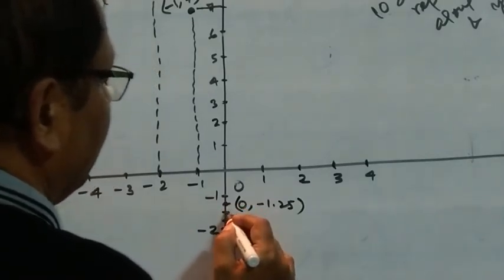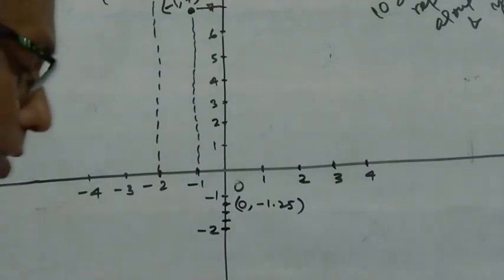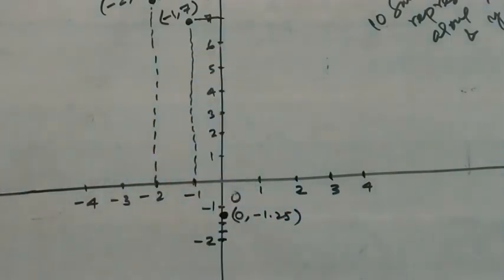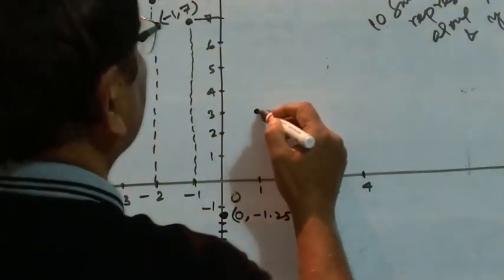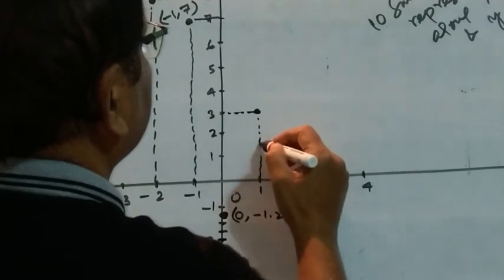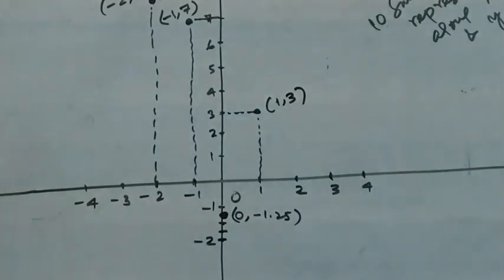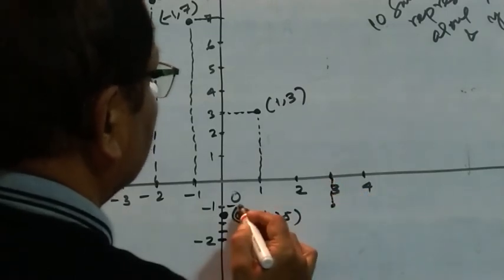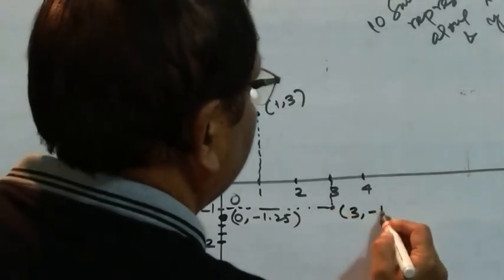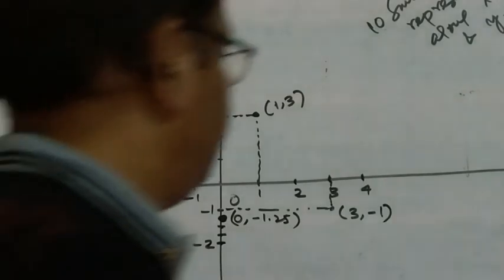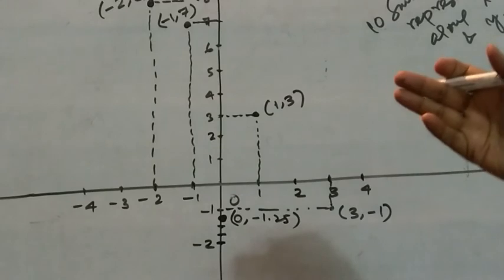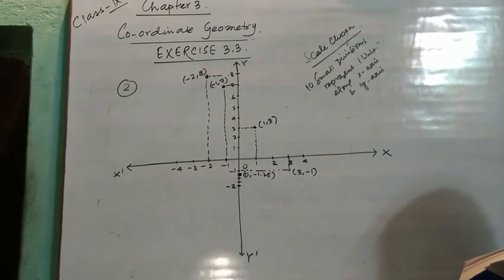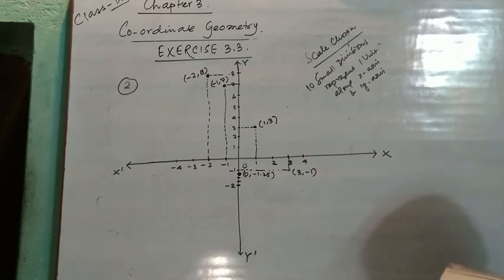The point (1, 3) lies in the first quadrant — X is 1 and Y is 3. The last point is (3, minus 1), which lies in the fourth quadrant — X is positive 3 and Y is negative 1, giving the coordinate (3, minus 1). In this way, we can plot all the points given in the table on the coordinate plane, choosing suitable units of distance on the axes.